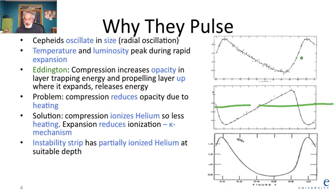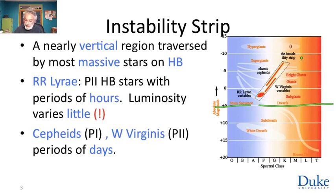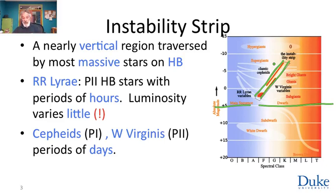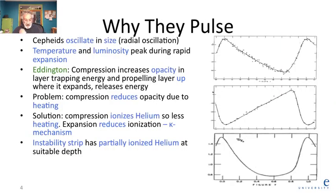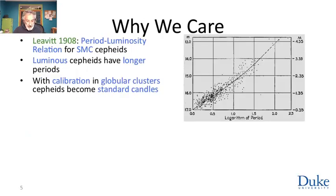The kappa mechanism determines the boundaries of the instability strip. Models tell us that it is stars in this region that have helium at the suitable temperature for partial ionization, where compression and expansion will change its ionization state deep enough in the star to push a significant amount of the star outward when energy is trapped, but not so deep in the core that core convection destroys the effect. So we think we understand Cepheid variables.